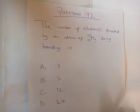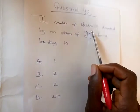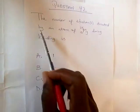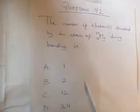This is question 42. It says, the number of electrons donated by an atom of magnesium during bonding is what?